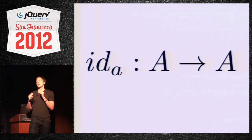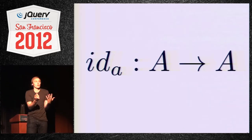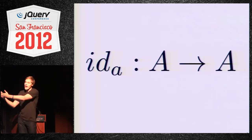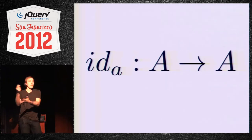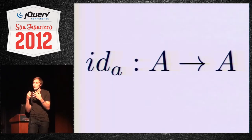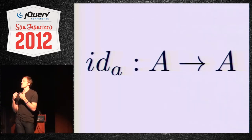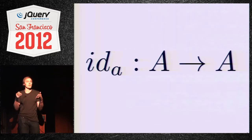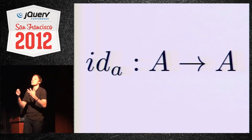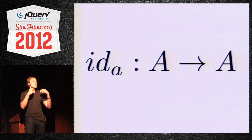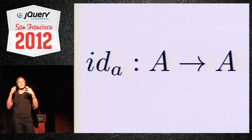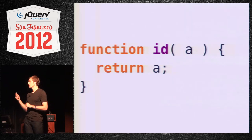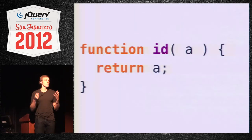There are two laws a category must satisfy. The first is identity. The notation is intuitive: identity takes some object and gives it back — that's all it does. In a lot of mathematics, it's just simpler to have something to put together with other things in terms of notation and readability. The category has to provide some identity morphism — some action that just takes an object and gives it right back. In JavaScript, this is exceptionally simple: it just takes some A and returns the A.